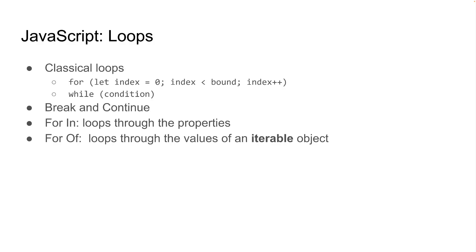The last question is: what is iterable? An iterable is an object — it can be any object that has some sequence of elements. So can you guess what that can be? An array, a string — even a JavaScript object can be iterable, and we can loop through the keys of that object.